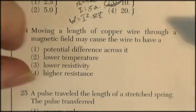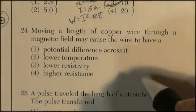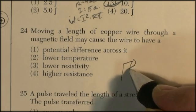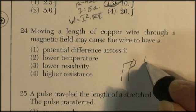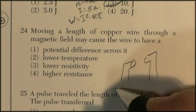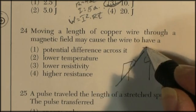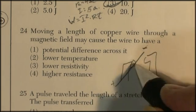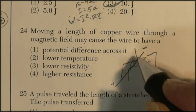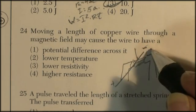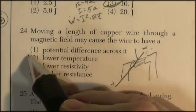Question 24. Moving a length of copper wire through a magnetic field. This is one of my favorite bits. I got a bunch of videos where I show this. I'll show you this again, but I've got so many. You got a copper wire through a magnetic field. As you move it, it creates electricity in the wire. A potential difference across the wire. Yes, that's it.